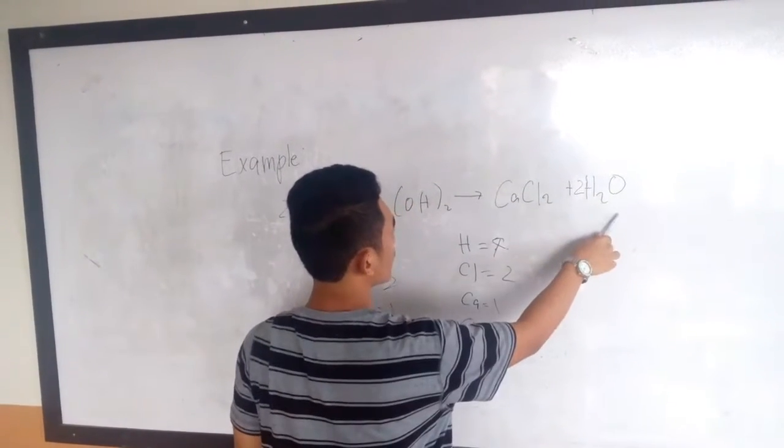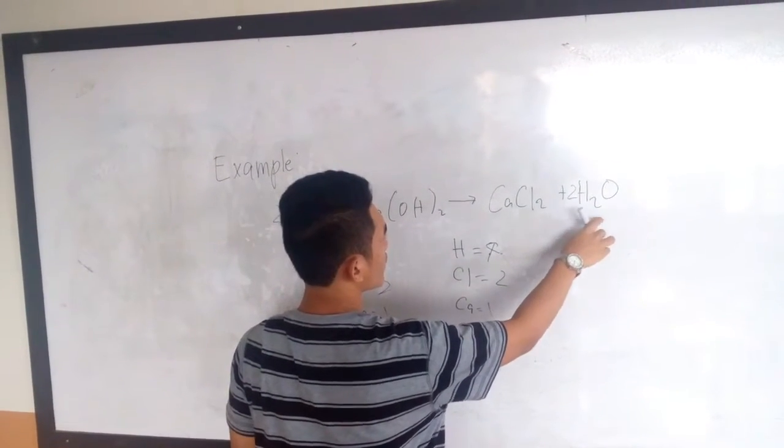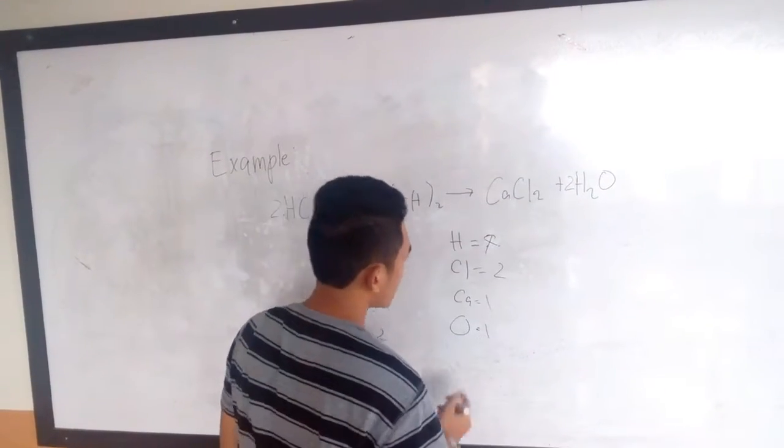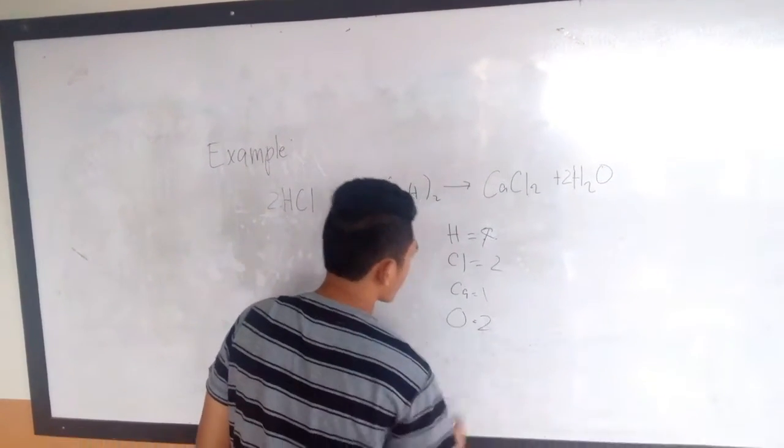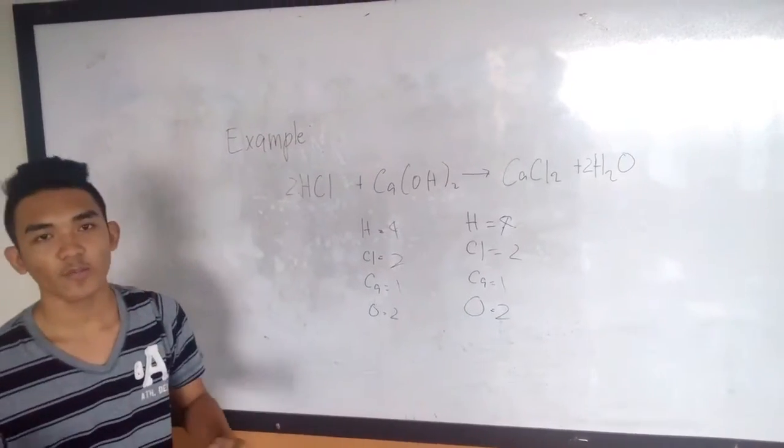Then the oxygen also becomes 2 because it's multiplied by this number. That's how you balance the equation.